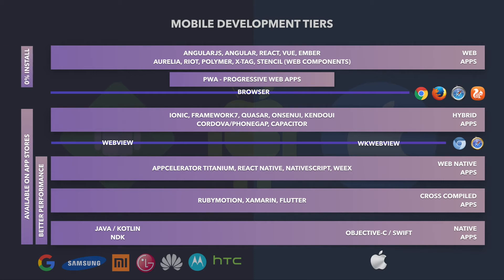On the other hand, you have 0% install, which is actually something good because web apps can achieve more users. When you have 0% install, you don't have the friction of sending users to the app store and asking them to install your app. And don't forget that all those top tiers can be written using popular web frameworks like Angular, React, or Vue — using the same code base all the way down to target different platforms.